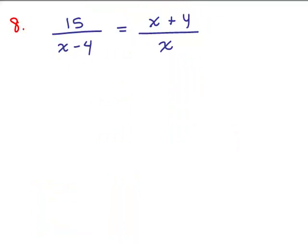Here's the next problem, number 8. Fifteen over x minus 4 equals x plus 4 over x. Now we could do the same thing here: multiply both sides by the least common denominator, which will be x times x minus 4. Or, because this is a proportion—it has one single fraction equaling another single fraction—I can do cross multiplication. It means you could multiply those two together, and it's the same as when I multiply those two things together. So I'm going to do it that way.